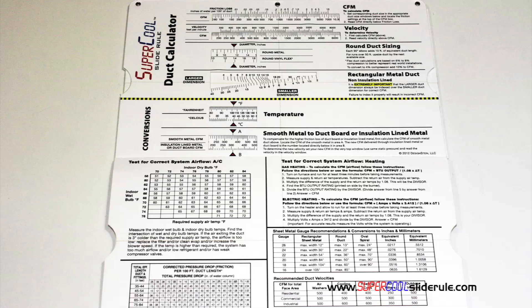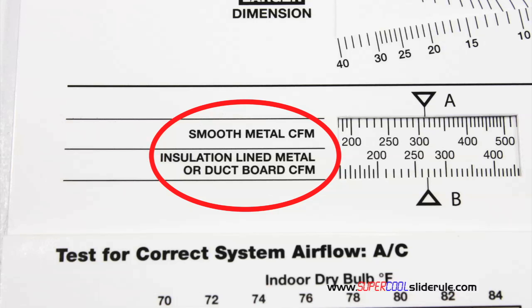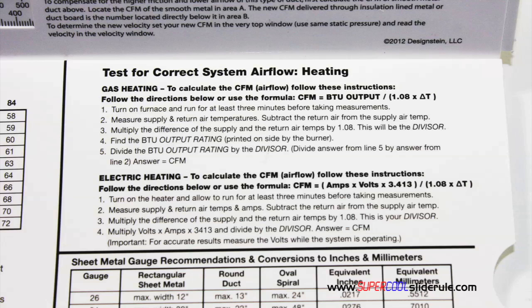Inside is packed with even more information. It performs sizing of both metal and flexible duct. It has the only direct reading conversion from smooth metal to insulation-lined metal we've ever seen. The majority of technicians have never been taught that if the insulation is on the inside of the ductwork you cannot size it with a regular duct calculator. It has step-by-step directions for determining airflow through a gas furnace, electric furnace, or an air conditioning unit.